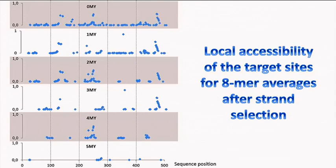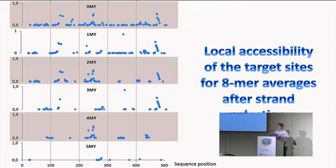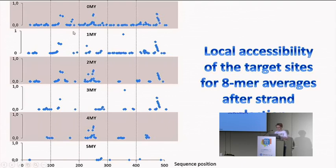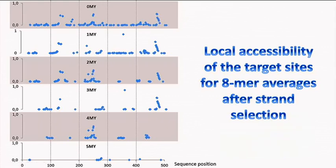We took our constructs and checked accessibility for each mer length, and for simplicity I'll show only the 8-mer average since we found it the most reliable. You can see the sequence position — 500 base pairs of the target — and the accessibility score, where zero means not accessible and one means very accessible. For the constructs up to four million years, which had an effect, there are quite a lot of accessible sites. For the five million year construct, they completely disappear. This fits our data — with this you can efficiently predict how efficient the siRNAs from your construct will be.